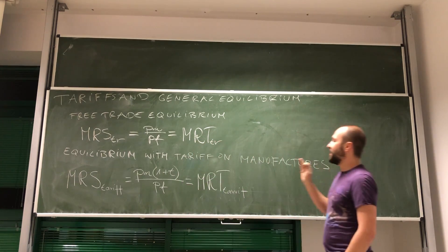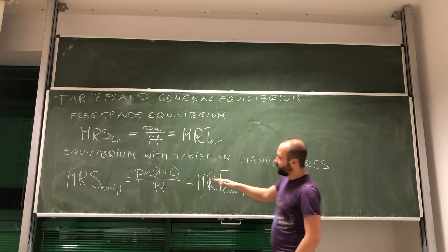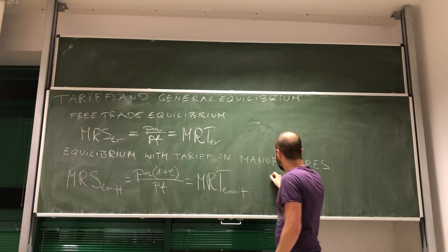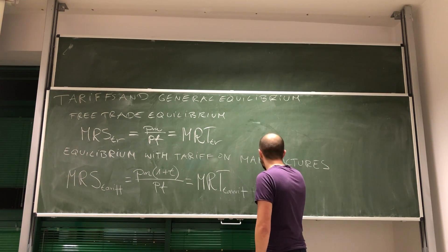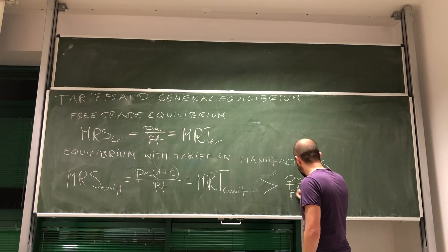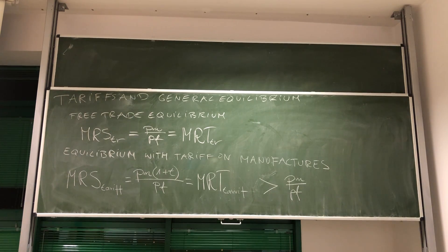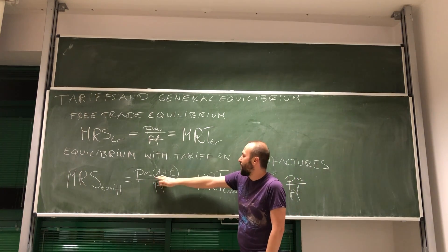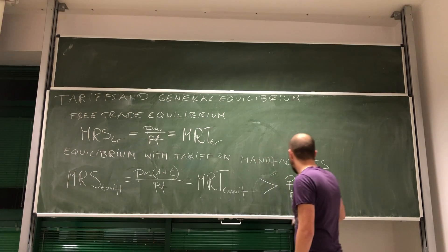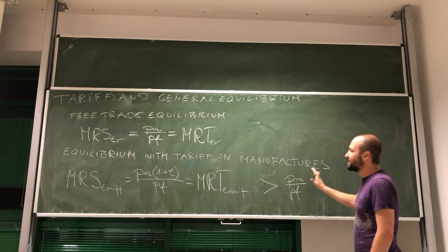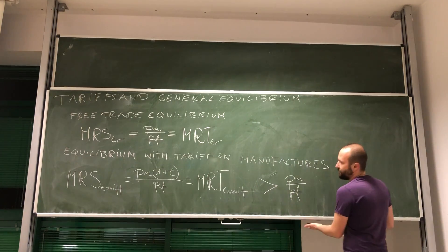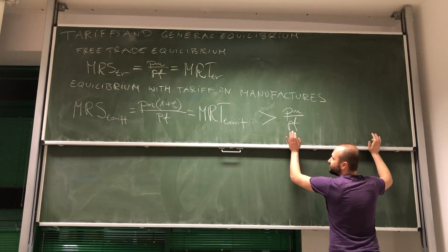And look, we can right away see that all three of these categories, which are equal to each other, must be bigger than the price of manufacturers to price of food ratio. Why? Because we are multiplying Pm by 1 plus t, and assuming t is not equal to 0, this price ratio must be smaller than this one. So let's illustrate what has happened after the introduction of the tariff in the graph we were using.